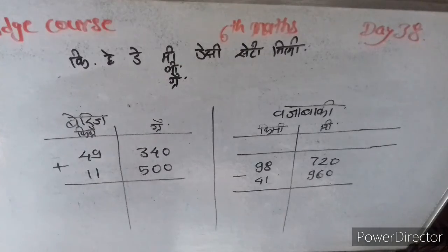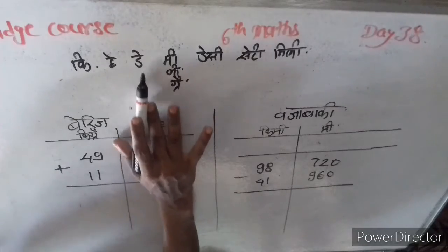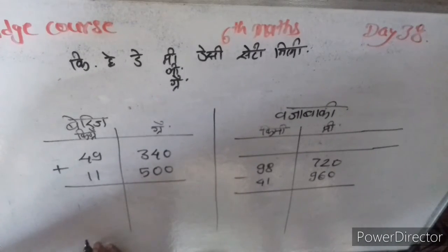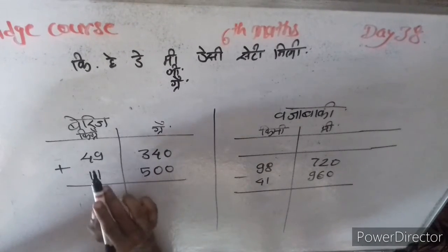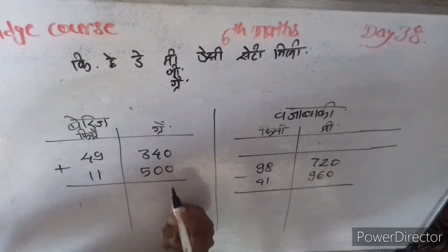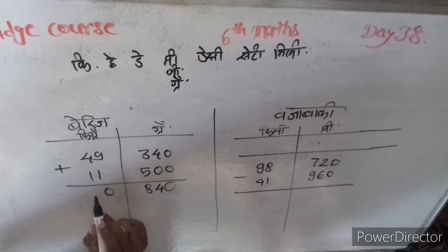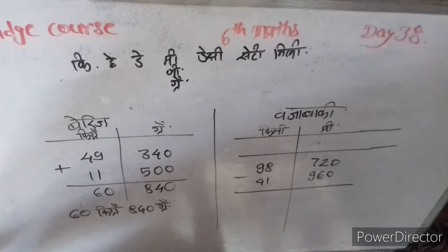How much do you understand? Now, what is this? 1 kilo 340 gram, 18 kilo 5 gram. 60 kilogram, 840 gram.